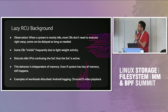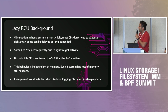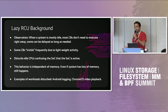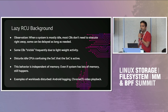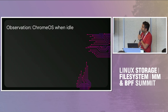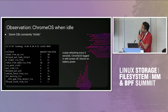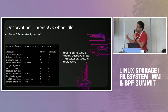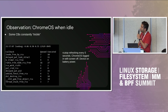Some examples of workloads where we noticed this: Android logging and Chrome OS video playback. These are lightweight activities that trigger a lot of RCU. In the video playback case, graphics buffers use the open and close syscall, which triggers RCU as well. I wrote a BPF-based tool that refreshes every five seconds and shows callbacks that are queued and executed — just to see how bad it was and whether we're doing work we don't need to.